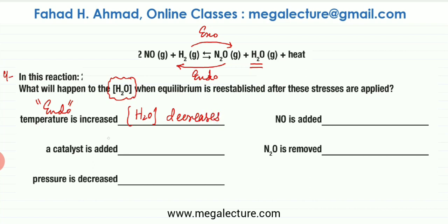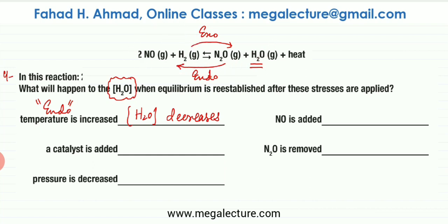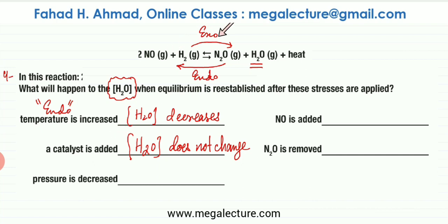The next part is that a catalyst is added. When a catalyst is added, nothing changes with the equilibrium position because the catalyst speeds up both reactions equally — forward as well as backward. So more H2O being produced in the forward reaction is offset by the backward reaction also speeding up. The net quantity of H2O would not be affected. Catalyst has no effect on the equilibrium position.